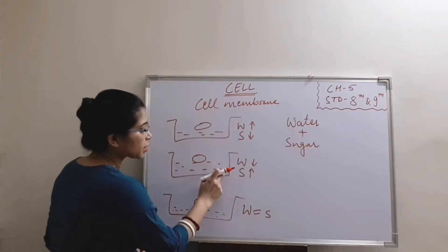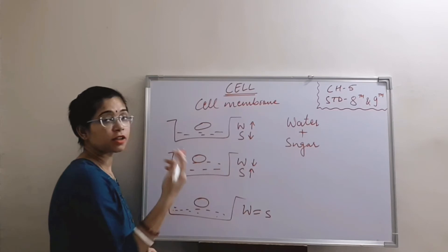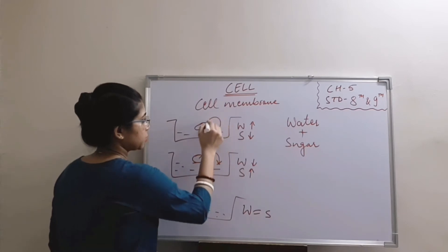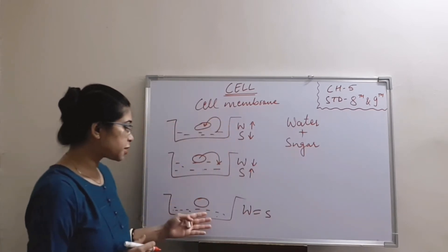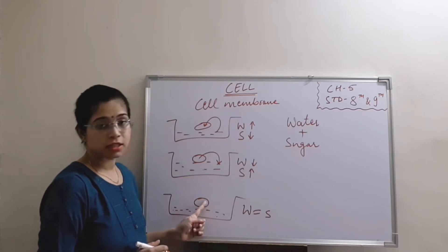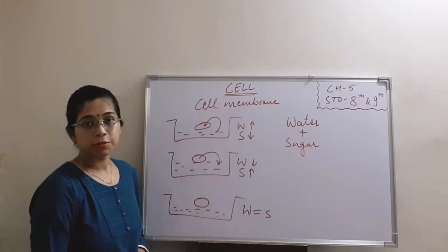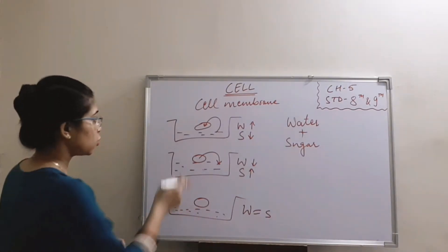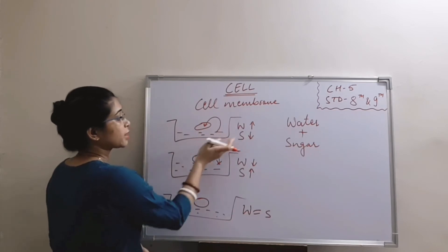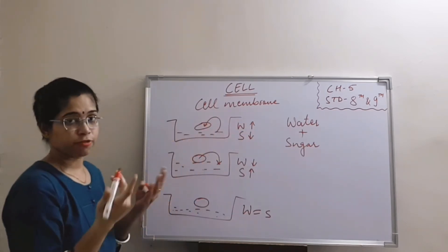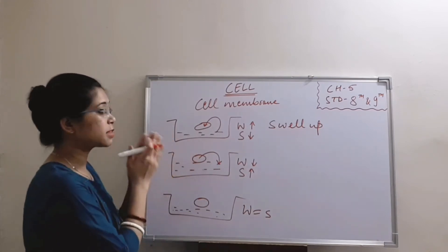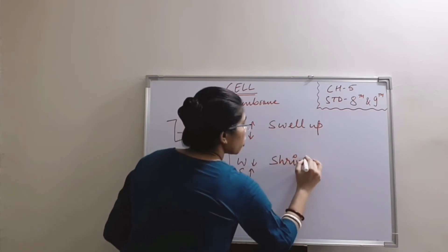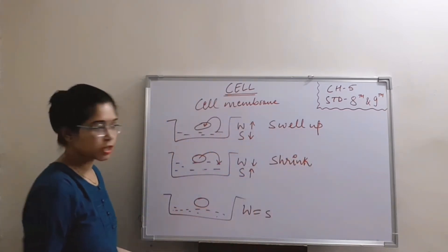In the second solution, the water particles are less, so there will be transfer of water particles from the cell to the outside environment. In the last solution, the concentration of water inside the cell is the same as outside, so there will be no change — no particle movement. When water particles enter the cell in the first case, the cell will swell up. When the cell is losing water particles in the second case, it will become flaccid or it will shrink. In the last solution, there will be no change observed.